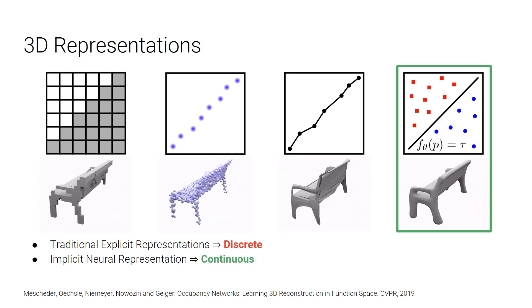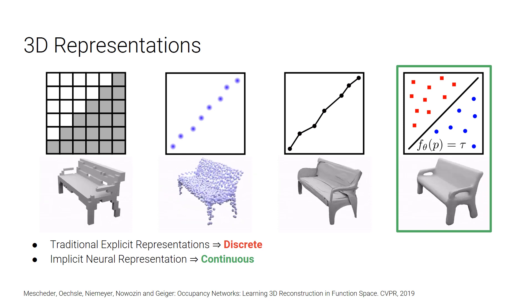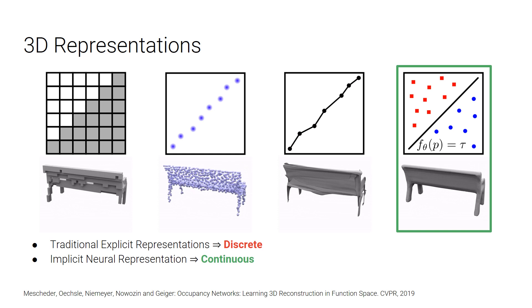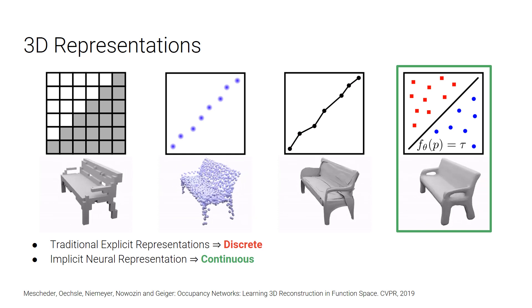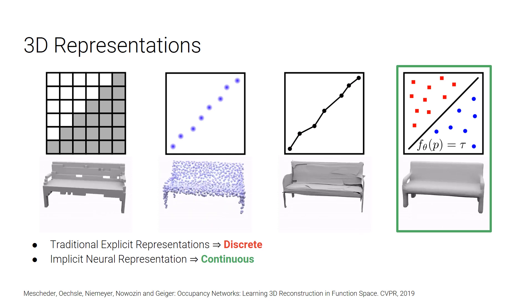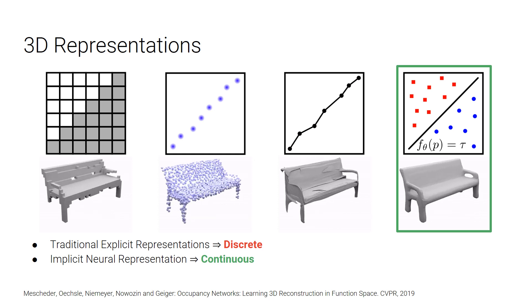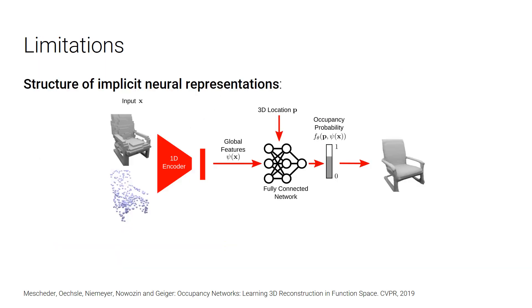Several papers from CVPR 2019, for example, Occupancy Networks, introduced a novel representation, where instead of representing the shape explicitly, they represent the output surface implicitly as the decision boundary of a neural network classifier to distinguish inside points from outside. Although this representation is able to produce smooth output and handle complex topology, it still has some limitations that stem from its structure.